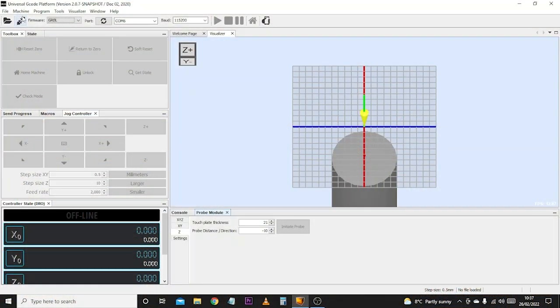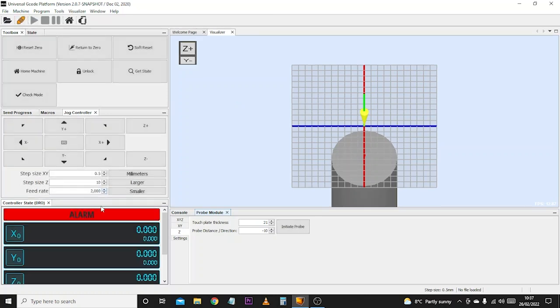In UGS, the first thing we're going to want to do is connect the machine. We'll click connect, and we should get the usual alarm message. We'll click unlock. Obviously, if you don't have limit switches, you won't get that alarm message.